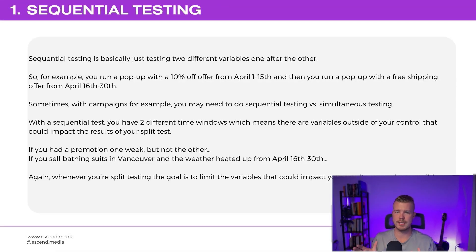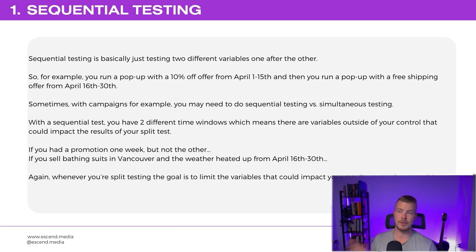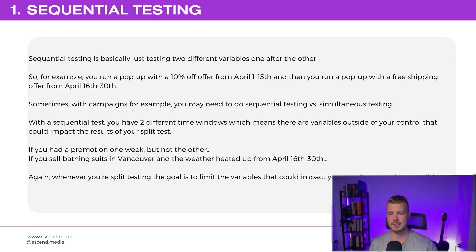With sequential testing you have two different time windows, meaning you have other variables outside of your control that could impact your results. For example, if you had a promotion one week but not the other, or if you're selling bathing suits and the weather heated up — different results could transpire. The goal is always to eliminate or limit the variables that could impact your split testing.